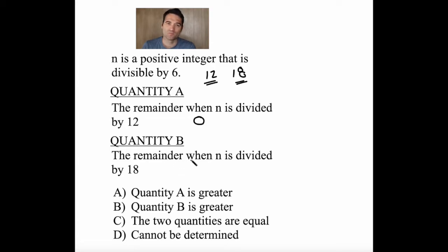How about when 12 is divided by 18? Well, 18 doesn't go into 12, right? It doesn't even go in once, meaning that there are 12 left over. So the remainder when 12 is divided by 18 is 12.